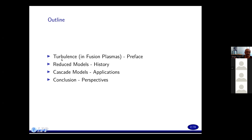So basically, I'll start by introducing turbulence in fusion plasmas, sort of like a preface, and then talk about what has worked in the past in the case of basic models, reduced models — a short history of that. Then I'll wander into the turbulence of Hasegawa-Wakatani, and show you maybe some results from those, and basically complain that we don't understand even those kinds of simple models, then discuss some cascade models and applications, and eventually conclude.